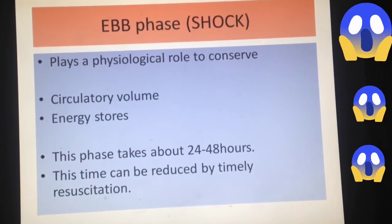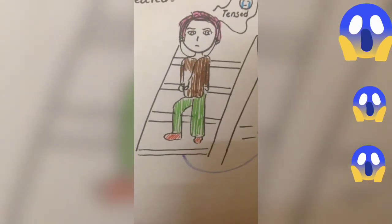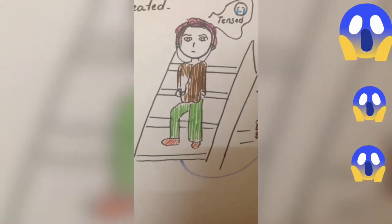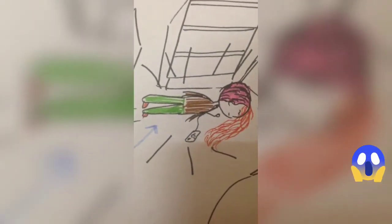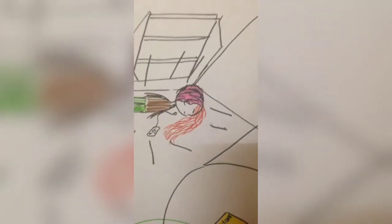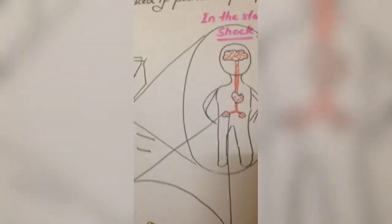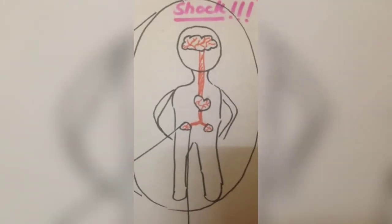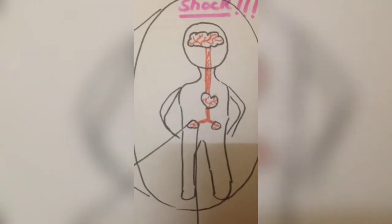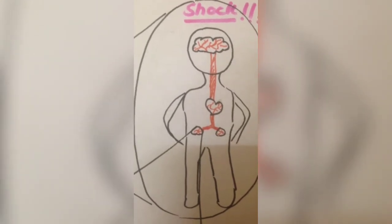The ebb phase lasts about 24 to 48 hours and can be reduced by resuscitation. To better understand, we will see a video. We need to know about the state of shock. For example, a pink-haired boy is climbing down the stairs when suddenly there is a lot of bleeding from the head. In this state, the patient enters the state of shock, which can be initiated by many things including surgery or other forms of stress. The heart pumps blood to itself, to the brain, and to the adrenal glands, while the rest of the body undergoes vasoconstriction, as these are the essential organs which need blood.